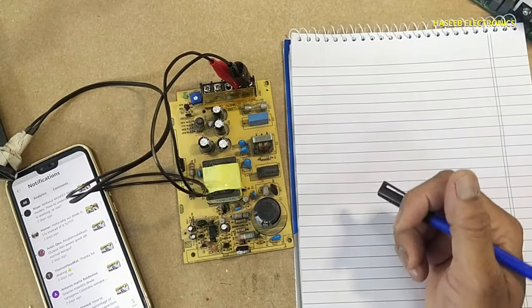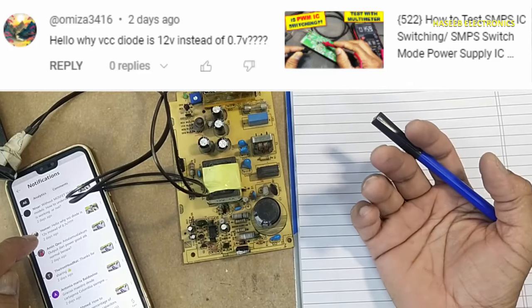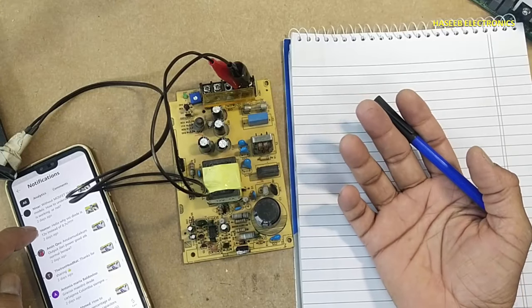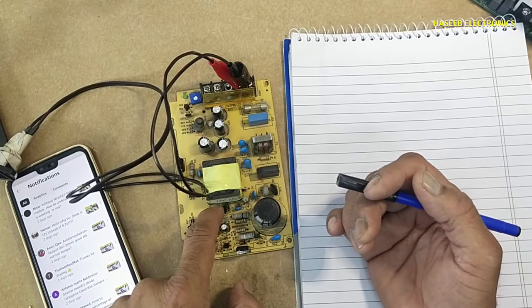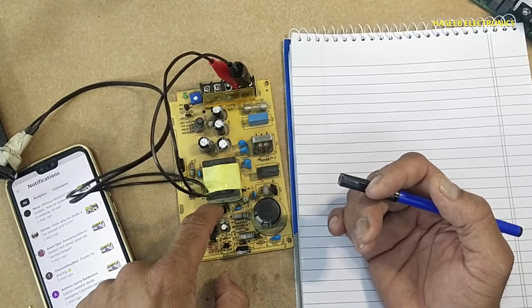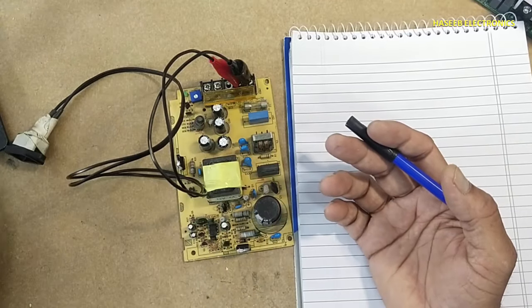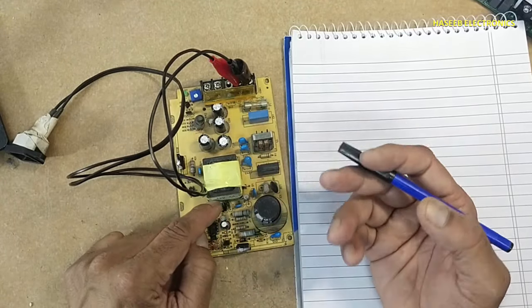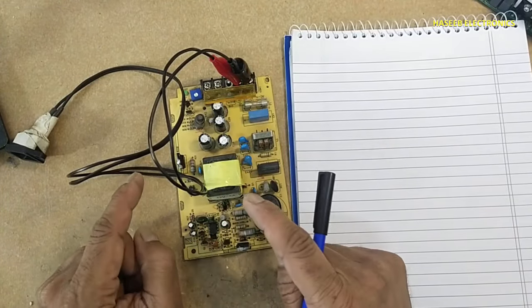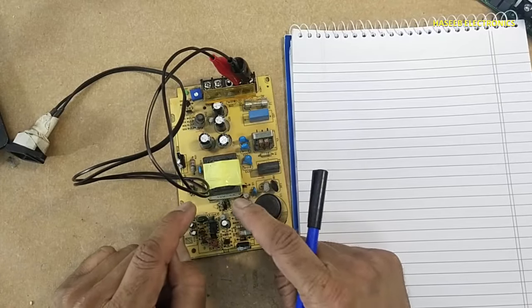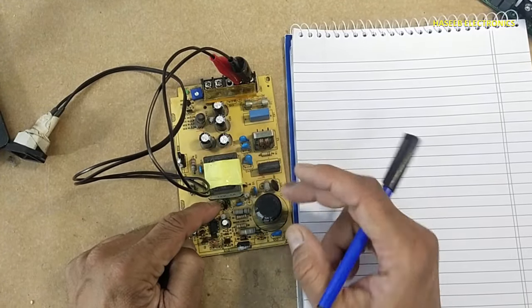Assalamualaikum warahmatullahi wabarakatuhu friends, welcome back to my channel. My viewer watched my last video for repairing SMPS and asked a question: why are there 12 volts across this VCC diode instead of 0.7 volts? I tested voltage while repairing this VCC section and checked that there are 12 volts across this rectifier diode. It is not a zener diode.